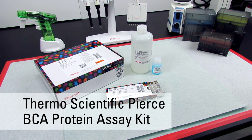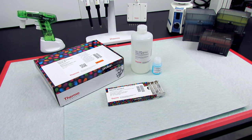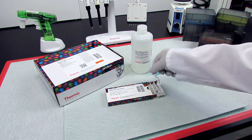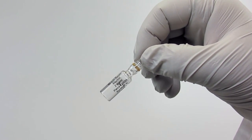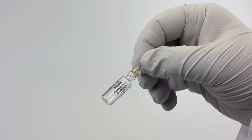The Thermo Scientific Pierce BCA Protein Assay Kit includes all reagents needed to accurately determine protein concentration in a sample, including purified bovine serum albumin standard in single-use 1 mL ampules for consistent standard curve generation.